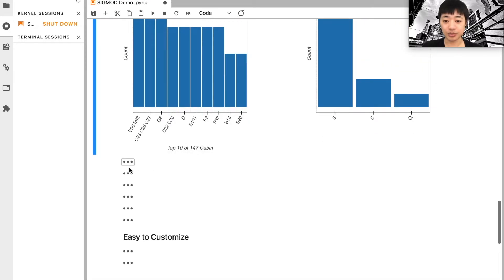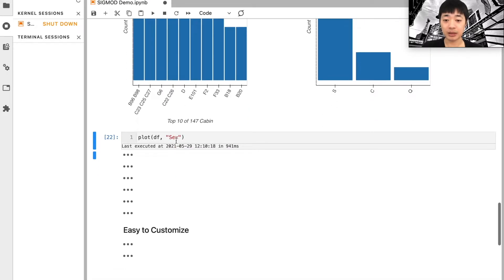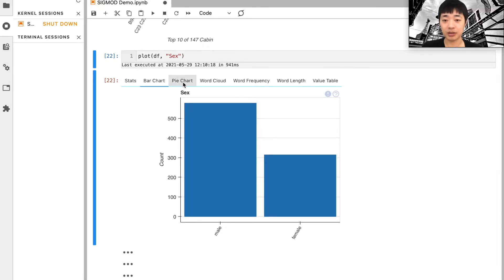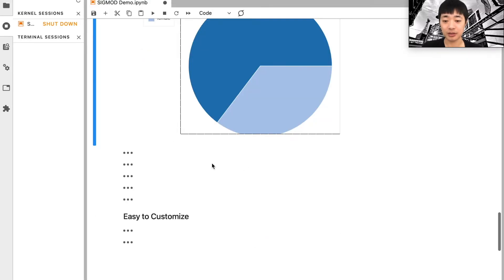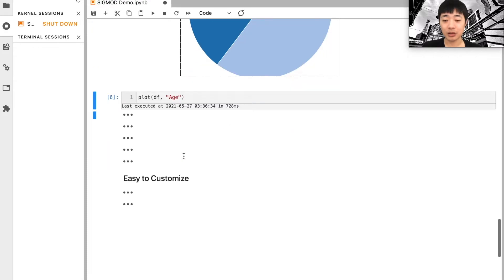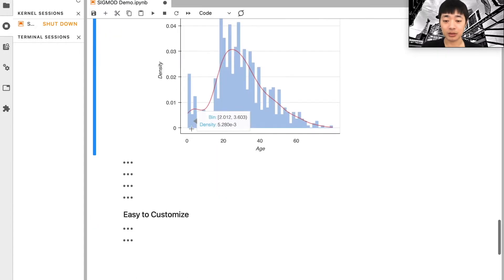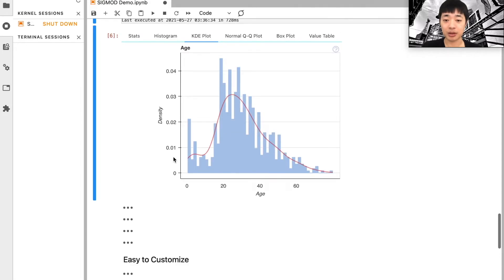You can also drill down a little bit by passing in a column name into the plot function. It will give you the statistics of that specific column, as well as more visualizations like bar chart and pie chart. You can also pass in a numeric column, which will give you statistics, histograms, and a KDE plot and some numerically-related plots.